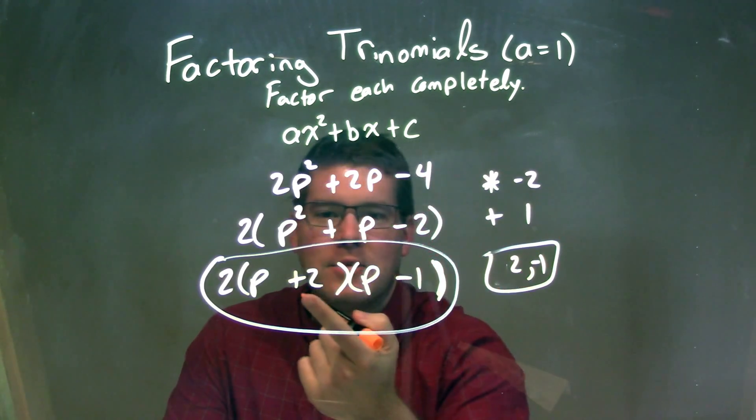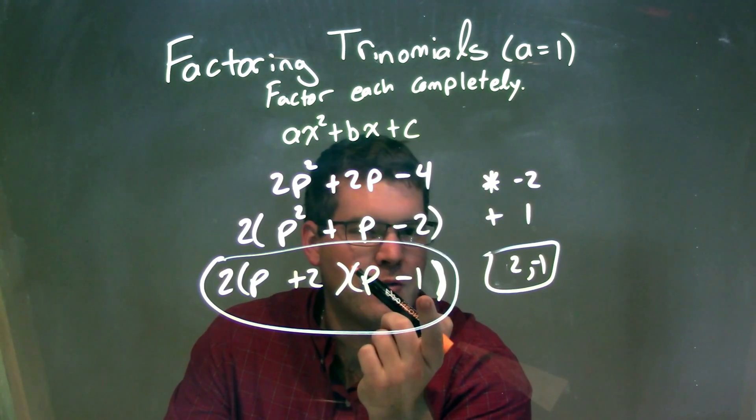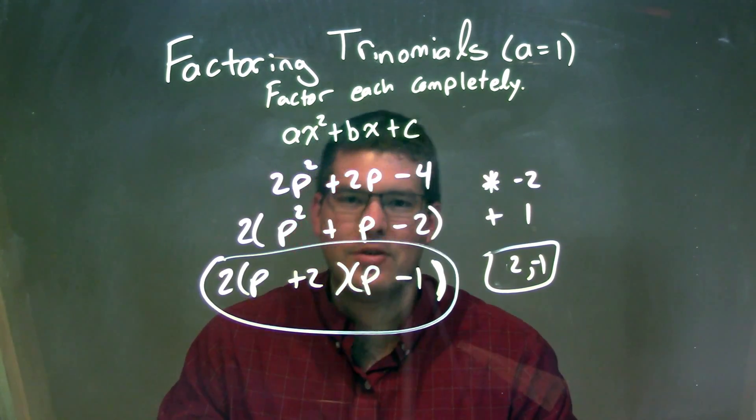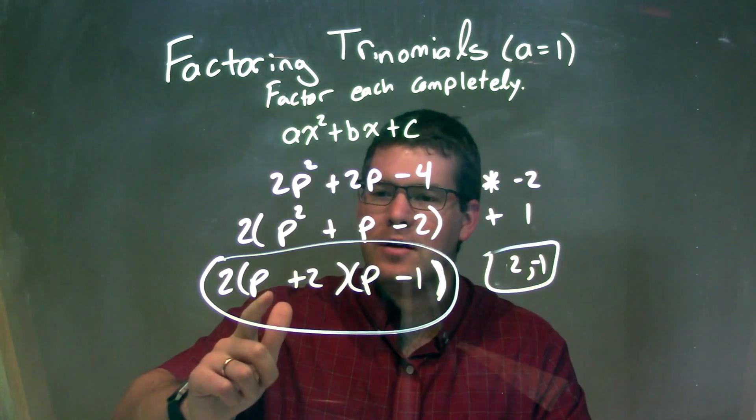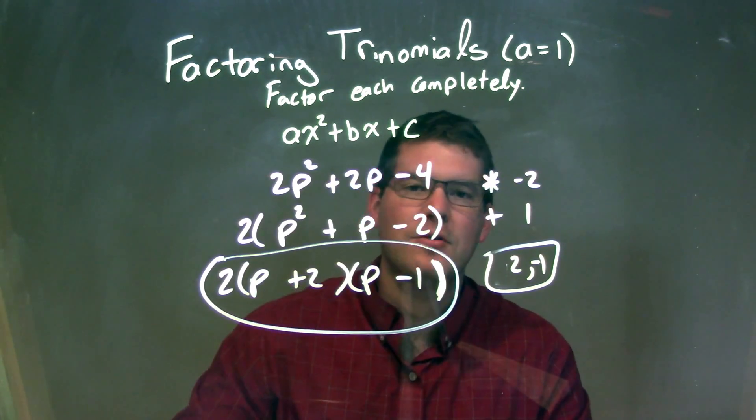So I can write that in factored form with the positive 2 right there and negative 1 right there and the p's right there, giving me my final answer of 2 times p plus 2 times p minus 1.